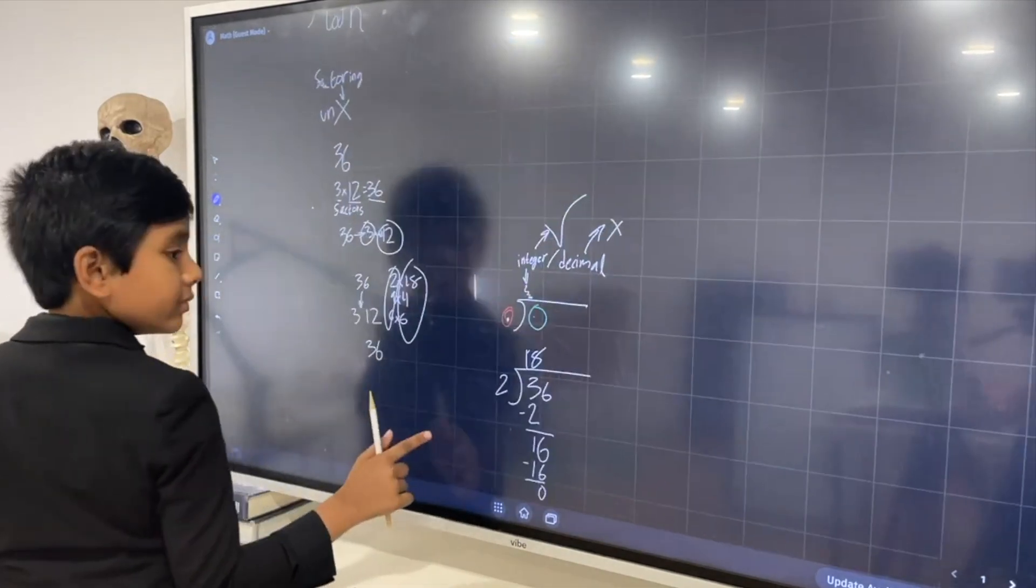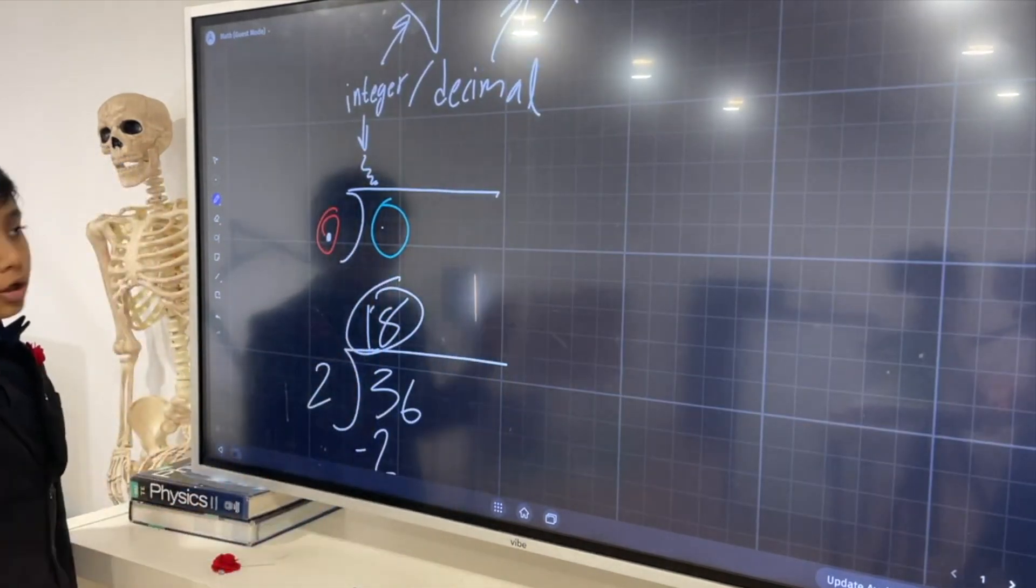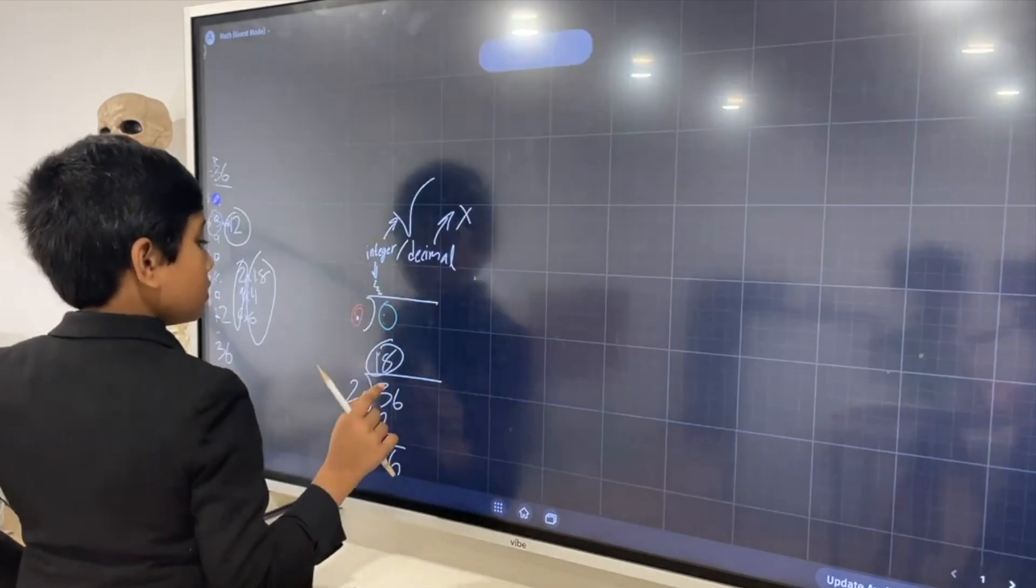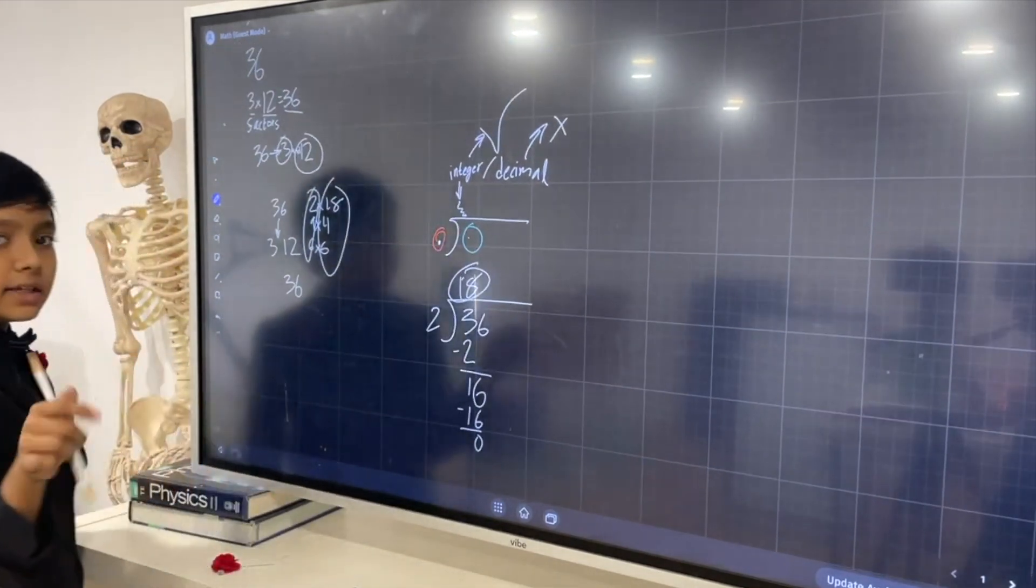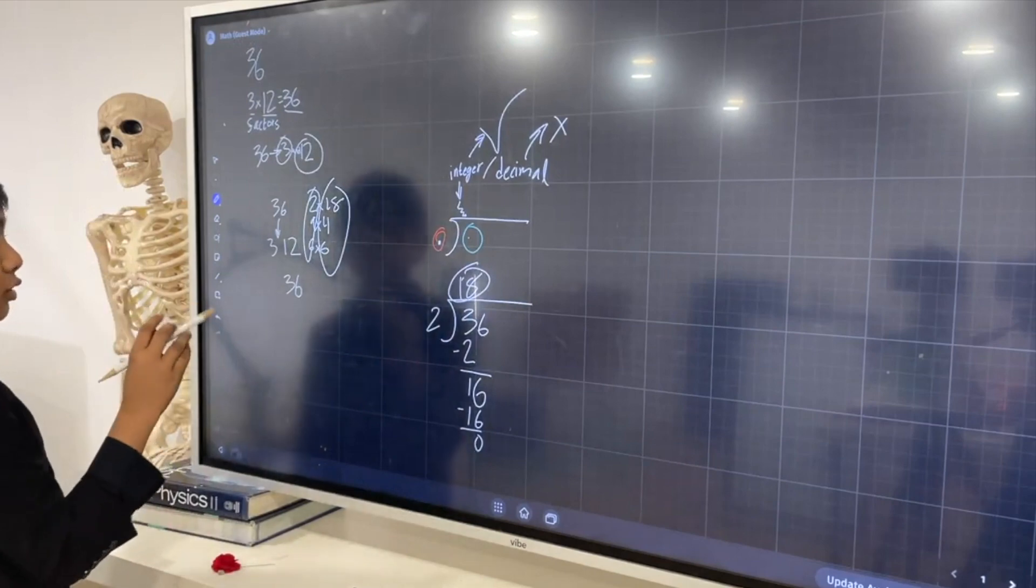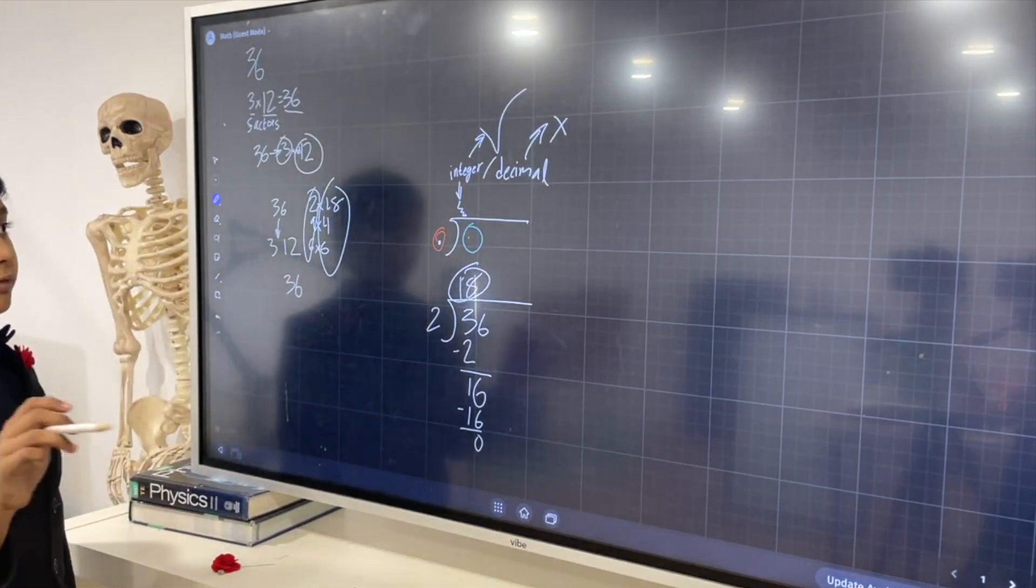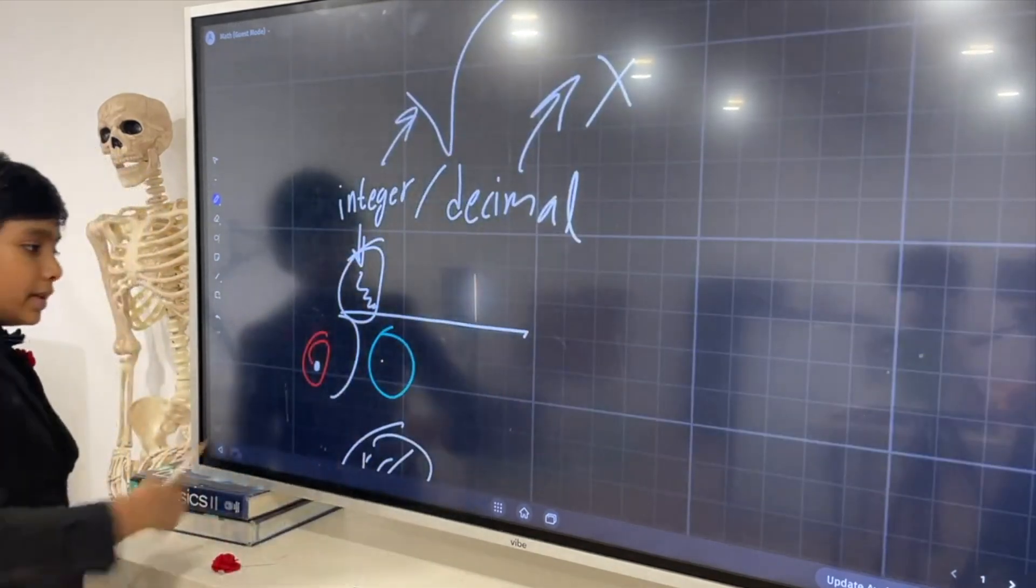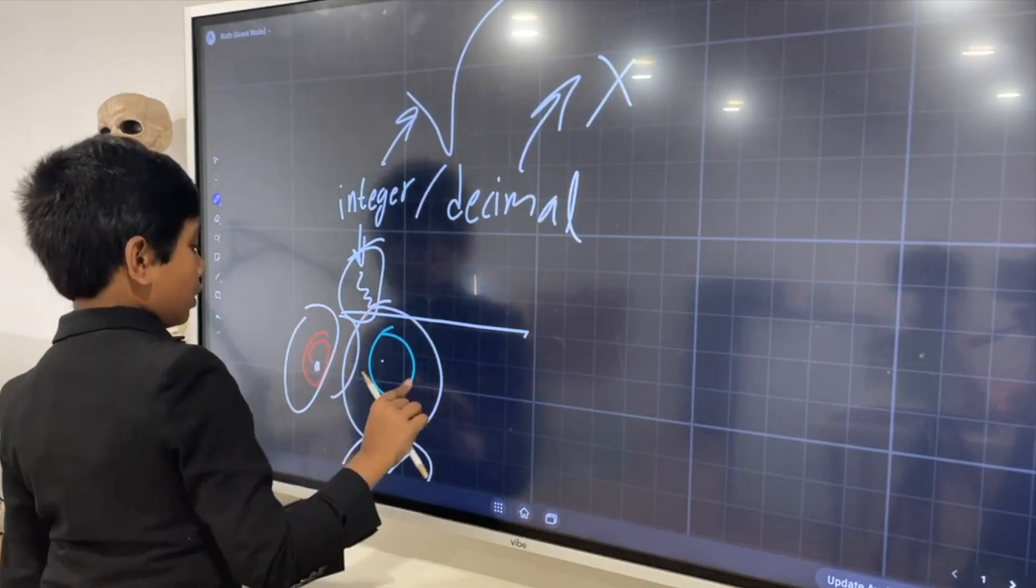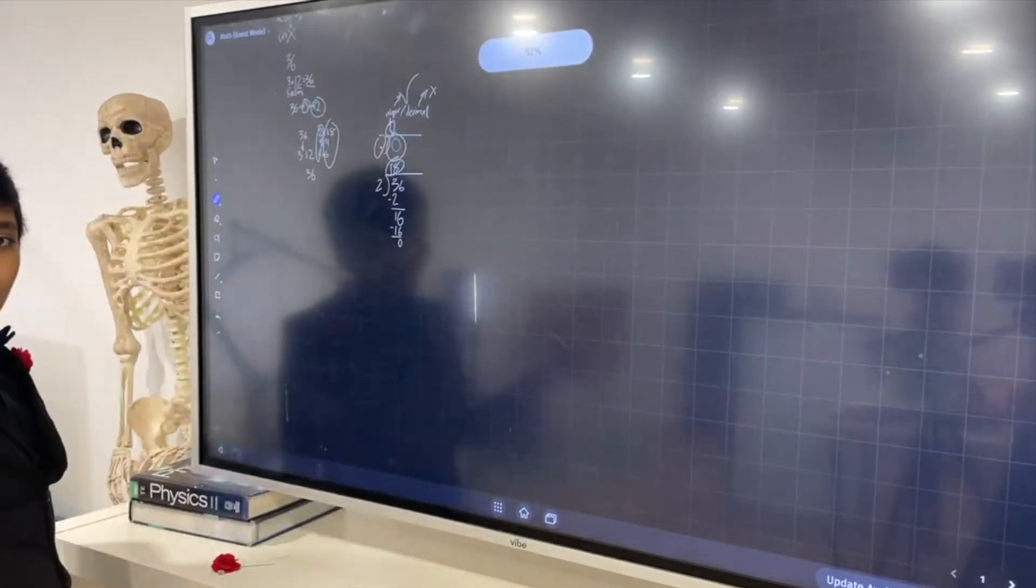So, now, that means we got an integer with no remainder at all. So, that means that 36 is divisible by 2. That means 2 is a factor of 36. Just like if this thing was an integer, that would mean that red was a factor of blue.